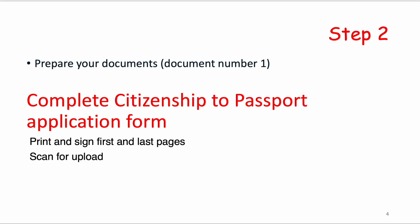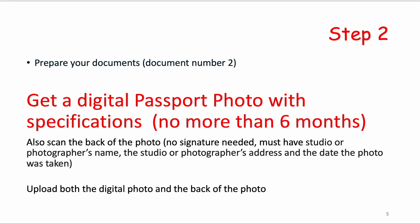The second step is to prepare your documents. You only need three documents. The first is the completed citizenship-to-passport application form, which will be attached in the email sent to you. It is a three-page form. After completing it, print it, sign the first and last page, then scan it back for upload.